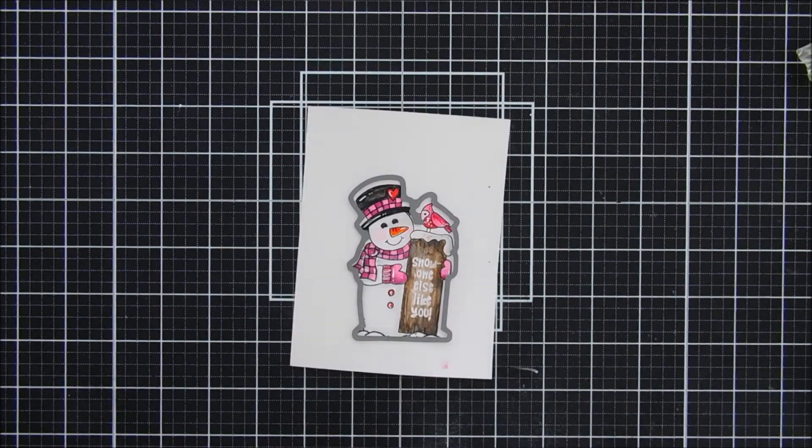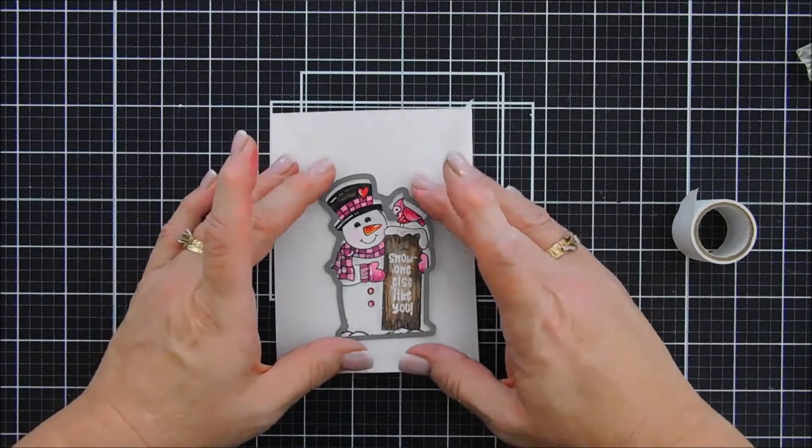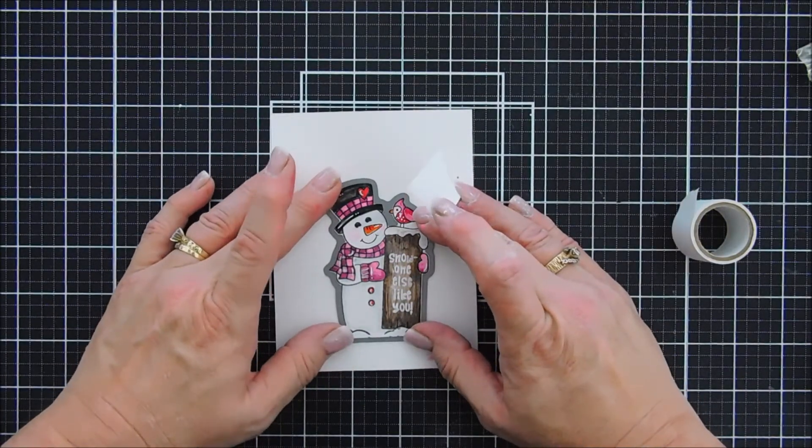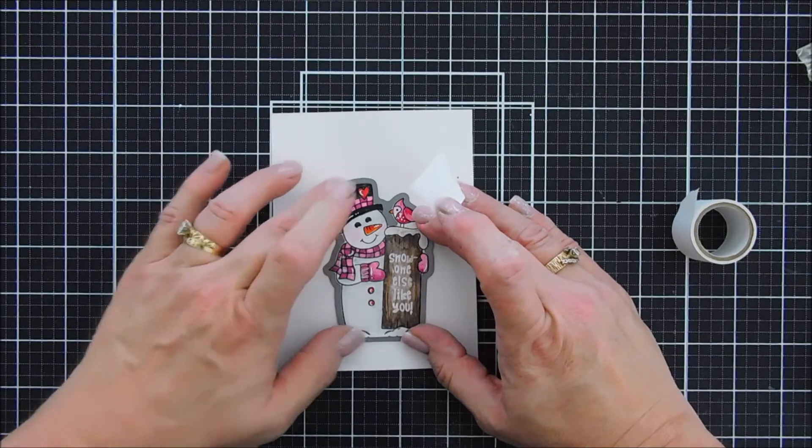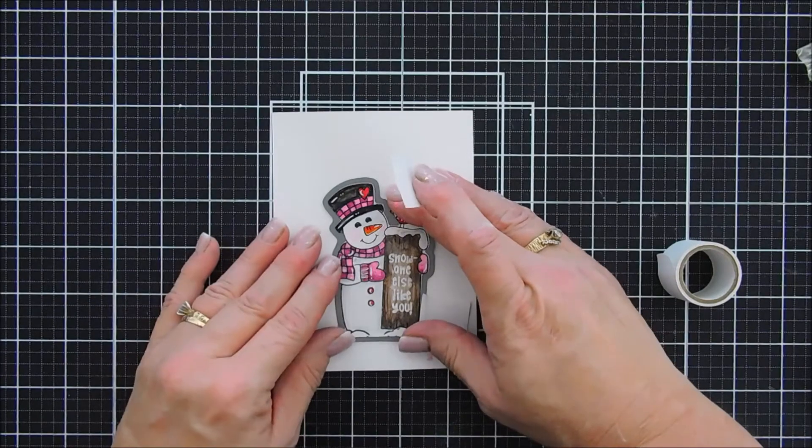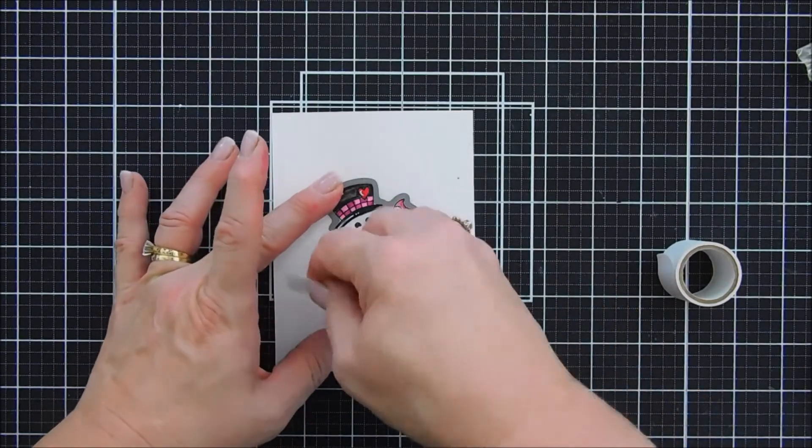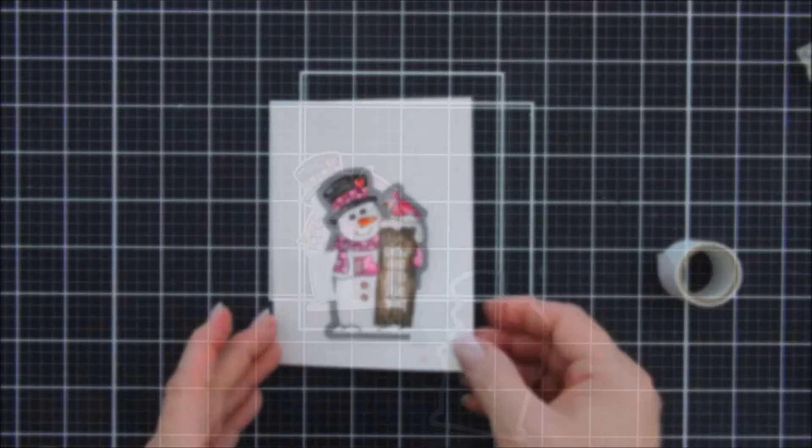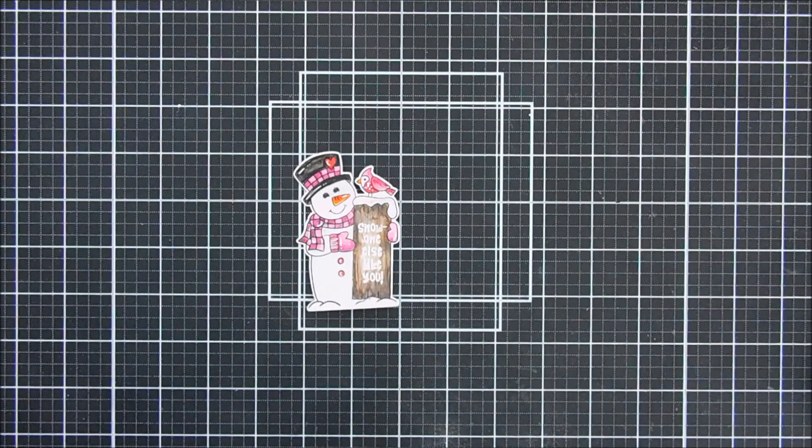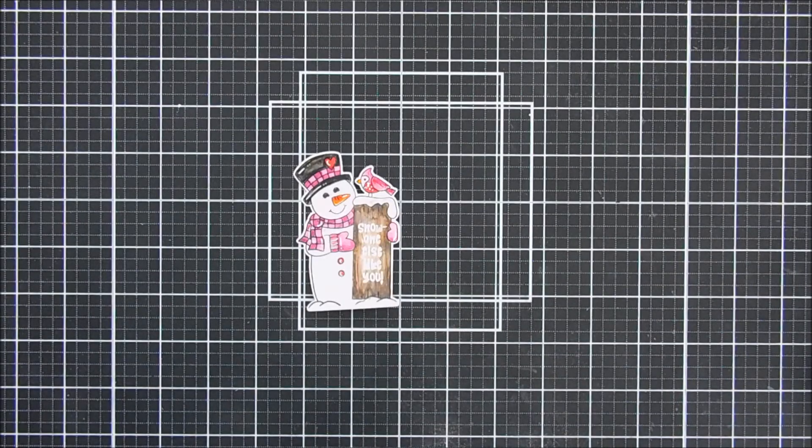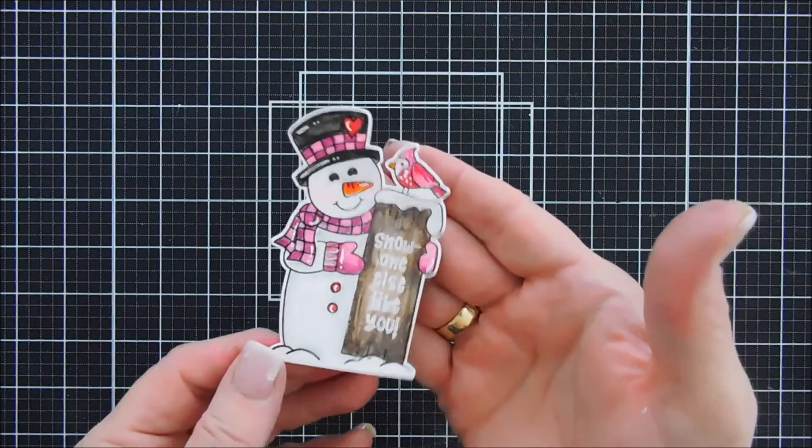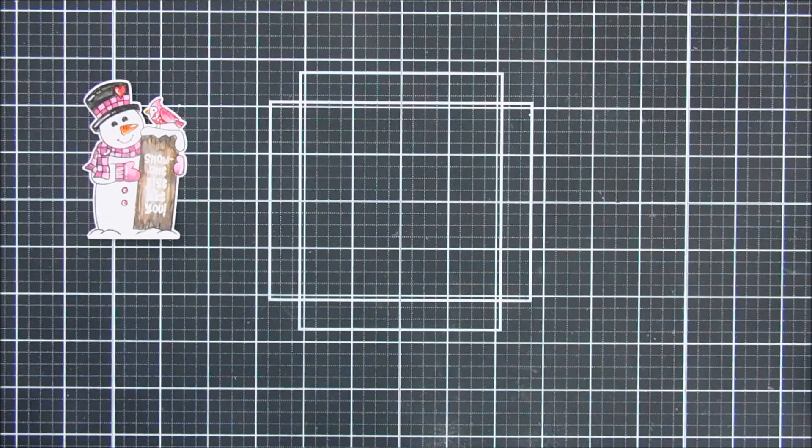I'm going to take the coordinating die and die cut out my snowman. Just tape it down. My paper warped a little bit when I dried it with the heat gun, so when I die cut it, it's going to be nice because it's going to flatten it a little bit. I'm going to tape down the other side too. And then that, the snowman, is the only image we're going to use for our card today. So, I'll put him aside. I'll show you close up the little highlights. And I love the bright pink.